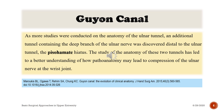As more studies were conducted on the anatomy of the ulnar tunnel, an additional tunnel containing the deep branch of the ulnar nerve was discovered distal to the ulnar tunnel — the pisahammate hiatus. The study of the anatomy of these two tunnels has led to a better understanding of how pathoanatomy may lead to compression of the ulnar nerve at the wrist joint.